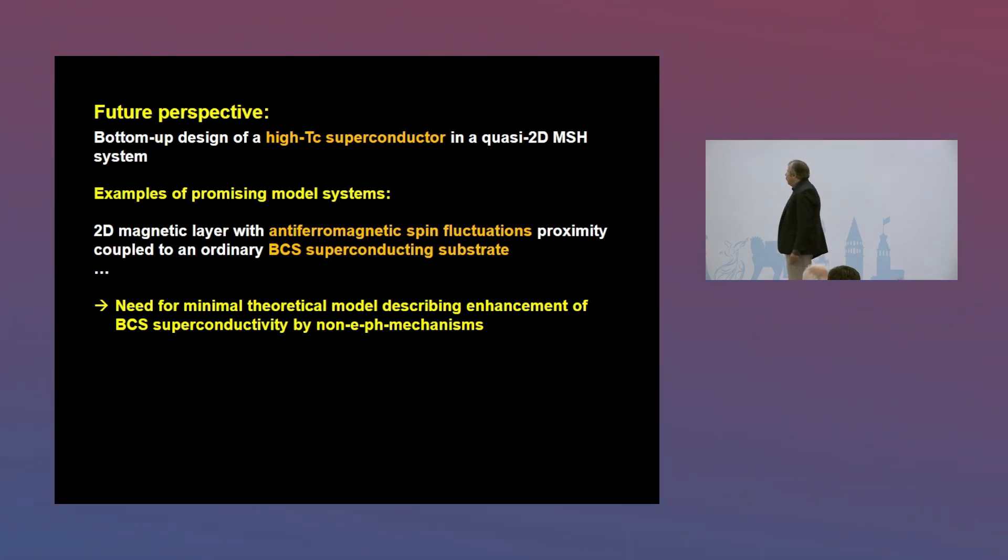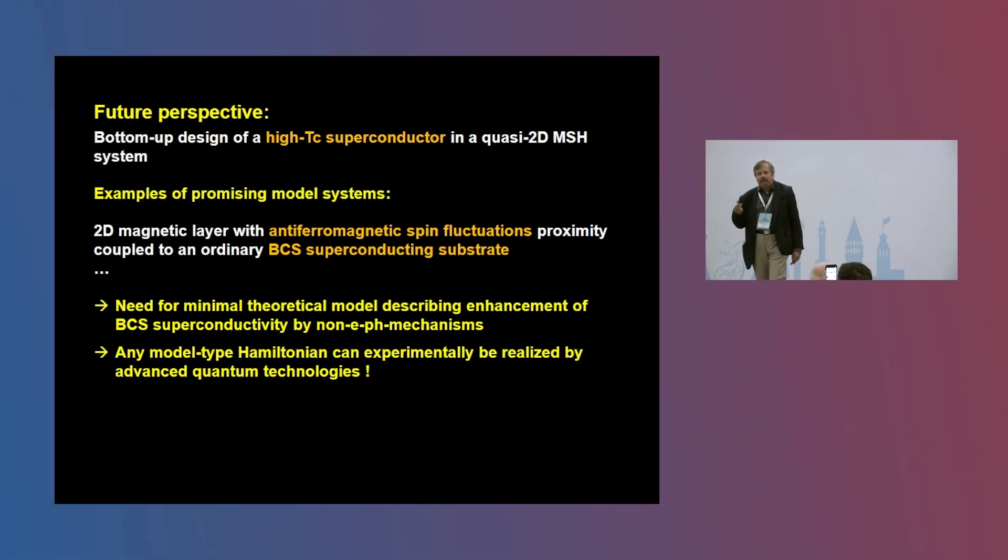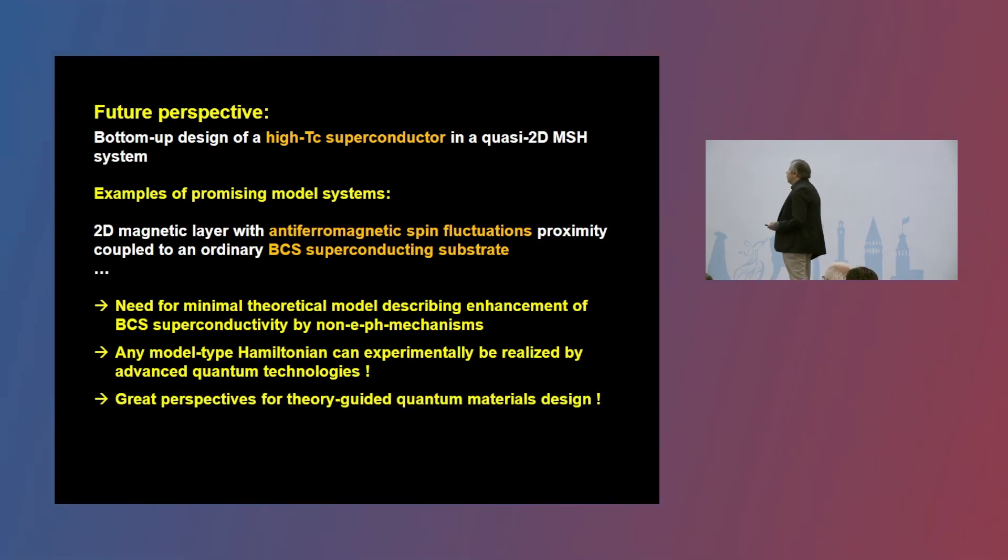So as I said, there are needs now for minimum theoretical models describing possible enhancements of BCS superconductivity by non-electron phonon mechanisms. The beauty is, as I showed you these days, for any model type Hamiltonian, we can experimentally realize this from the bottom-up from individual atoms. So the accuracy now for condensed matter systems is exactly the same as for quantum optics. You all know that quantum optical systems have been used for quantum simulation already for quite some time now. But quantum optical systems are different from condensed matter systems. But now, we have the same kind of precision. We can really realize any kind of model Hamiltonian, as you have seen by the Kitaev model Hamiltonian, which we can realize now experimentally. So there are really great perspectives, I would say, for theory-guided quantum materials design, due to all these advances in quantum technologies and especially in atomic scale technologies, which is what I wanted to say. Thank you very much.